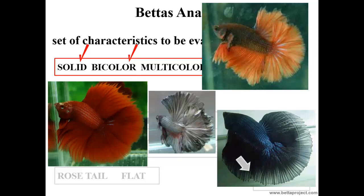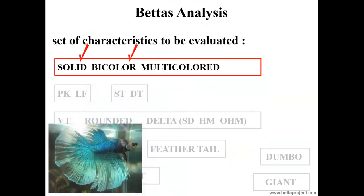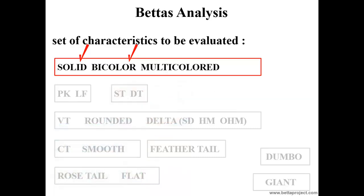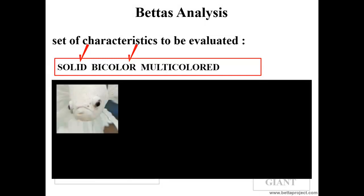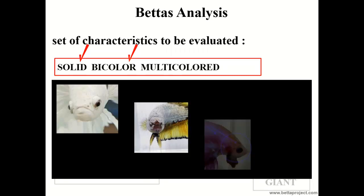If the BETA has any type of mask — either the head completely covered in color, or only presenting some colored scales — this should present the same color as the rest of the body. And finally, there must not be any marbling or red loss under the action of the marble and red loss genes respectively. In terms of judgment criteria, preference should be given to full mask BETAs over those with partial masks, and BETAs with partial masks over no-mask BETAs.